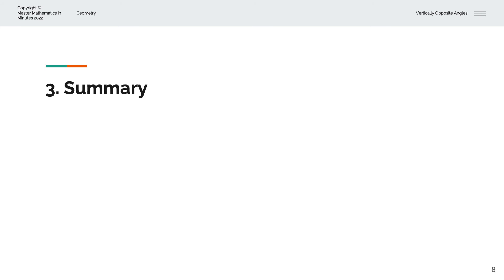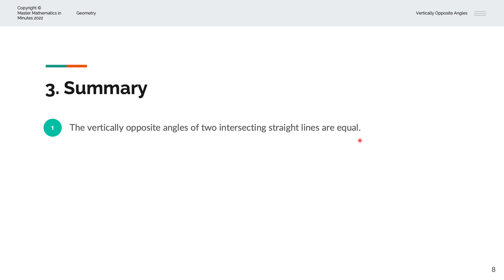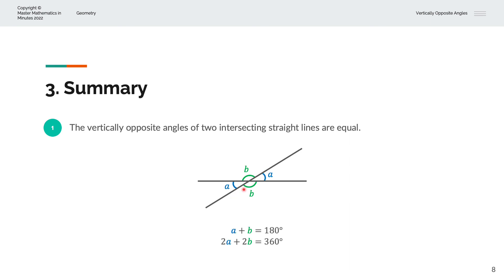To summarize, the vertically opposite angles of two intersecting straight lines are equal. Consider two straight lines: if that angle is B, the angle that is vertically opposite that is also B. And if we were to label those angles A, the vertically opposite angle is also A. Because A plus B form angles on a straight line, they will be equal to 180 degrees. And 2A plus 2B are angles around a point, which is equal to 360 degrees. Thank you very much for watching. This is Master Mathematics in Minutes.